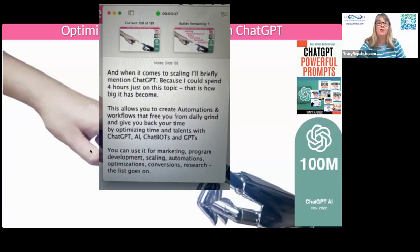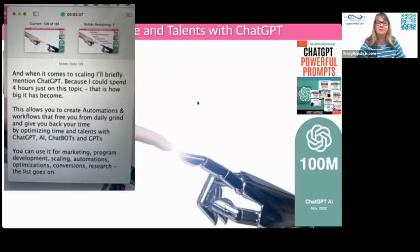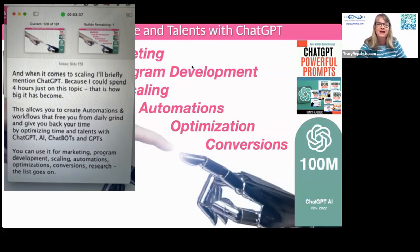So now I will go through it like I'm doing it. When it comes to scaling, I'll briefly mention ChatGPT, because I could spend four hours just on this topic — that is how big it has become. This allows you to create automations and workflows that free you from the daily grind and give you back your time by optimizing time and talents with ChatGPT, AI, chatbots, and GPTs. You can use it for marketing, program development, scaling automations, optimizations, conversions, research — the list goes on. When you embrace the power of ChatGPT, you will witness the transformative impact it can have on the speed of your success. It was born to give you quantum leaps.